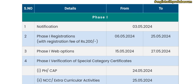The official notification has come today, that is 3rd May. Phase 1 registrations start from 6th May 2024 to 25th May 2024, and the registration fee will be Rs. 200. Phase 1 web options — that means when you can choose colleges — will be from 15th May to 27th May.